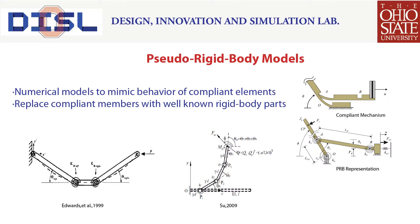Pseudo rigid body models, shortened to PRB models, are numerical representations of compliant elements. They capture the stiffness and kinematic properties of flexible members using springs and rigid body links respectively. Many PRB models have been developed for various applications by researchers over the past two decades. The figure on the right shows a compliant slider mechanism and its PRB representation.